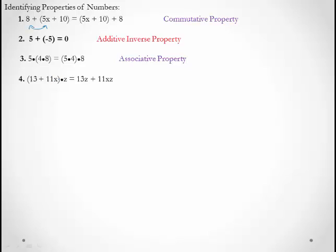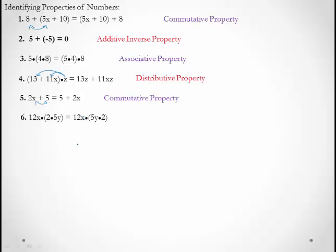13 + 11x times z equals 13z + 11xz. So what happened is z got multiplied by 13 and by 11x — that's the distributive property. Then 2x + 5 = 5 + 2x: a switching of places — that's commutative property. And 12x × 2 × 5y = 12x × 5y × 2: we switched places — that gives us commutative property.